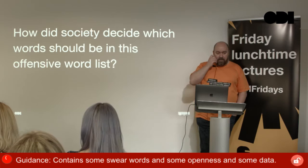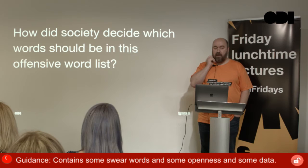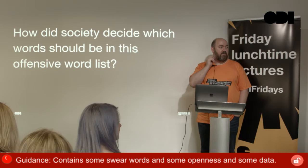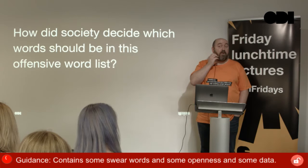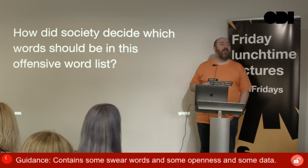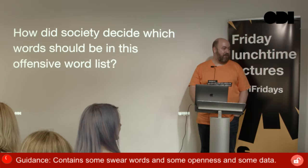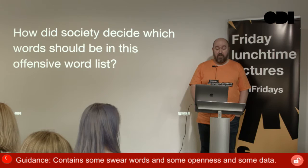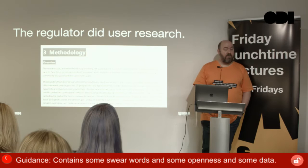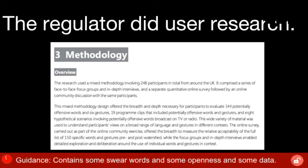How did we decide the words that should be in the offensive word list? Maybe they just went down to the train station and shouted out words and looked at who flinched. Complaints data — that would be a good one. What they actually did was use research: lots of focus groups. They selected groups of people from different backgrounds, different contexts, different cultures, different ages, and tested lots of words with them. That context bit around swearing is quite important. So they did classic user research — it just came out in a 128-page PDF.